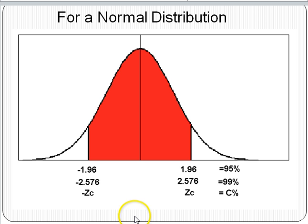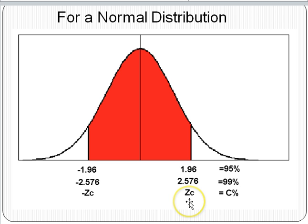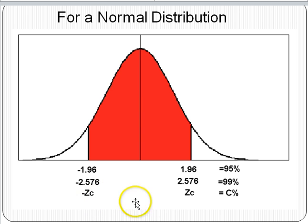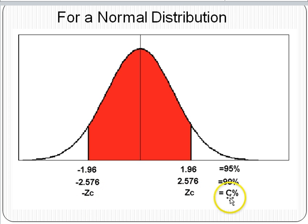In general, between some score Z sub C and negative Z sub C, about C% of the data will fall. The number of standard deviations you go up and down from the mean depends upon the confidence level.